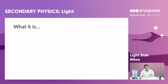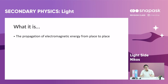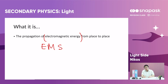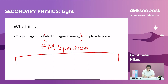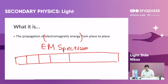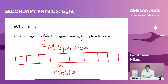So the first thing we have to understand is: what is light? Here's a brief definition — it is the propagation of electromagnetic energy from place to place. The unfamiliar term here is electromagnetic energy. This refers to the electromagnetic spectrum, or EM spectrum for short, which is a range of radiations all the way from gamma radiation to X-radiation and more. What we're interested in is visible light, which lies right in the middle of this spectrum.